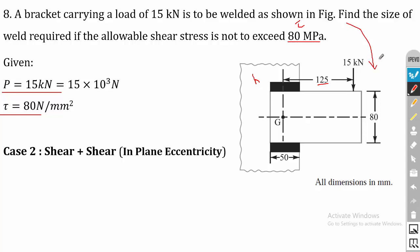The eccentricity will try to rotate the region and produce a torque in the weld region. This will not produce a bending stress on the weld. So it comes under Case 2 because it is acting on the same plane — it is in-plane eccentricity. In Case 2, the primary stress is shear stress and the secondary stress is also shear stress. We have to calculate the stresses individually and finally calculate the combined tau value, from which we calculate the size of the weld.